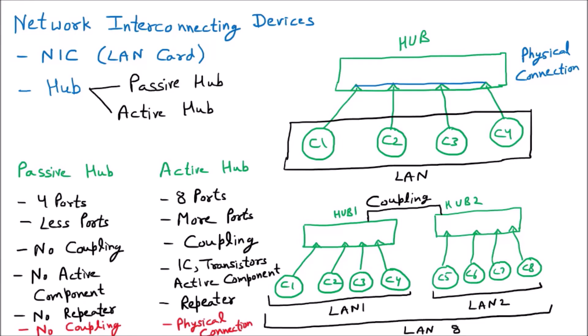To understand physical connection, consider a multi-bolt with four plugs connecting a laptop, a fan, an AC, and a charging point. At home, each device has a separate switch, so switching on one device doesn't affect others. But with a multi-bolt, all devices share one connection — switching it on turns everything on at once, which illustrates the physical connection problem of a hub.